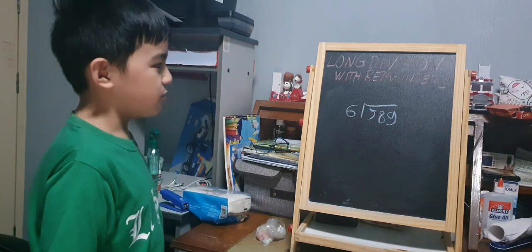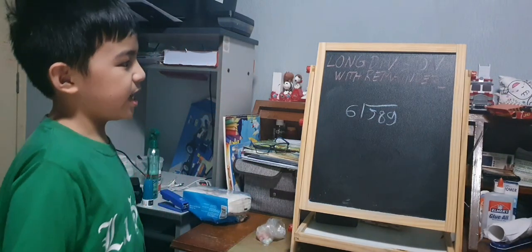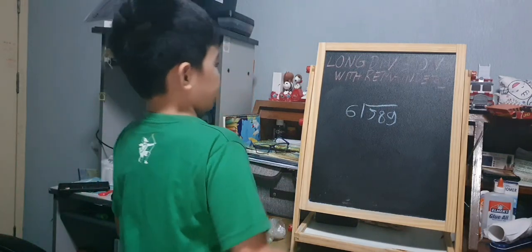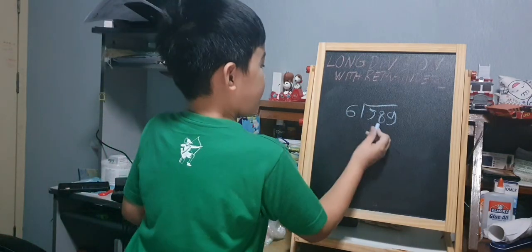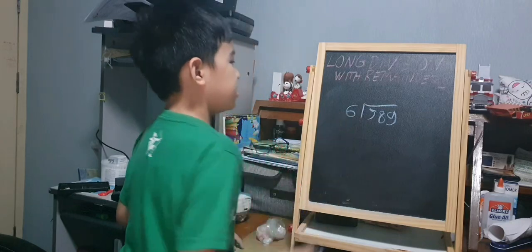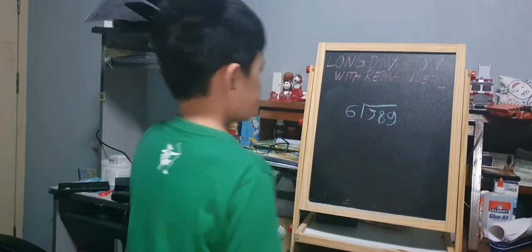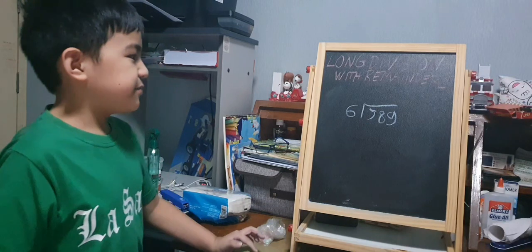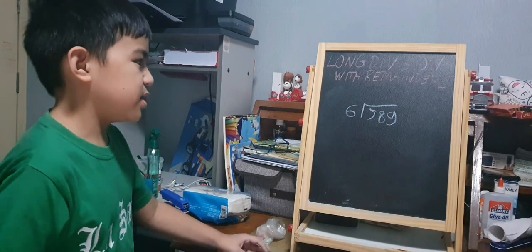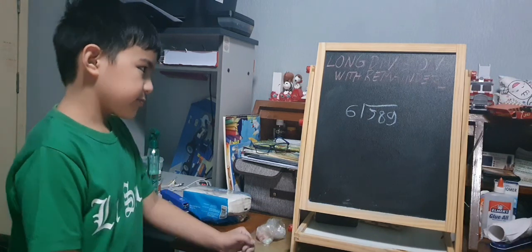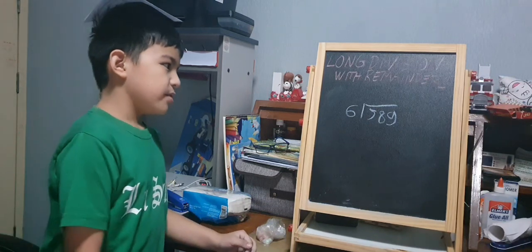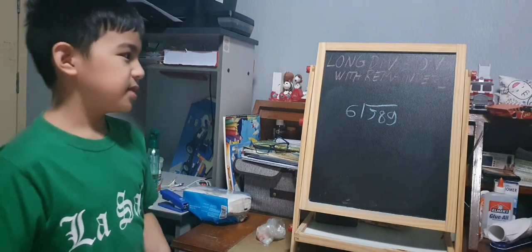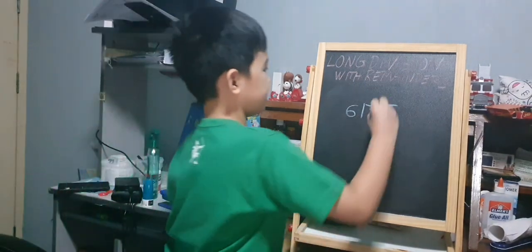The first thing we will do is divide. Can we divide 5 by 6? No. So we extend to 58. So now it's 58 divided by 6. 58 divided by 6 is 9. So we put 9 on top of 8.